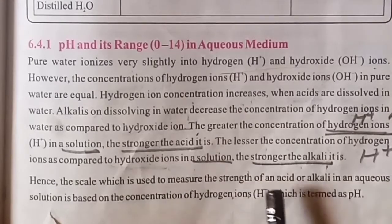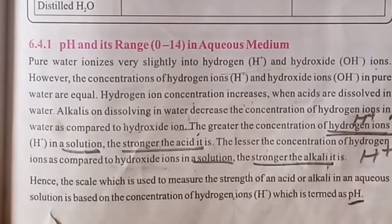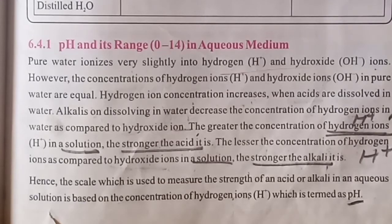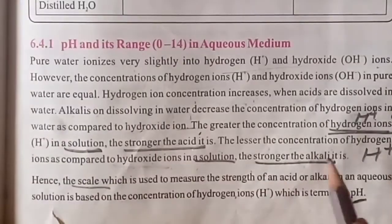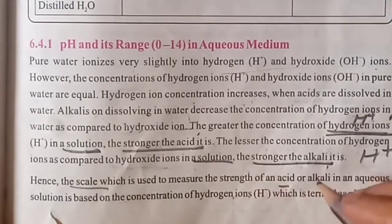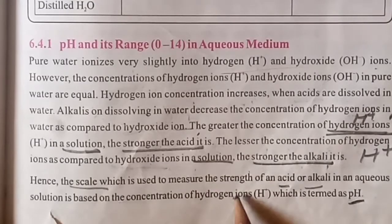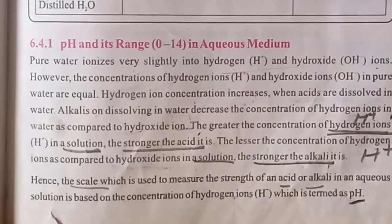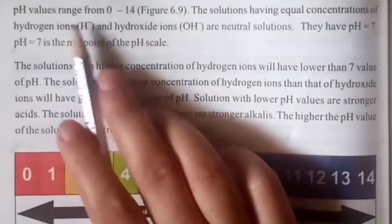The scale which is used to measure the strength of an acid or alkali in an aqueous solution is based on concentration of hydrogen ion, which is termed as pH — the power of hydrogen. If we need to find the strength of any acid or alkali, we use the pH scale to determine which solution is more acidic or alkaline, strong or weak. Here you can see a picture of the pH scale which ranges from 0 to 14.